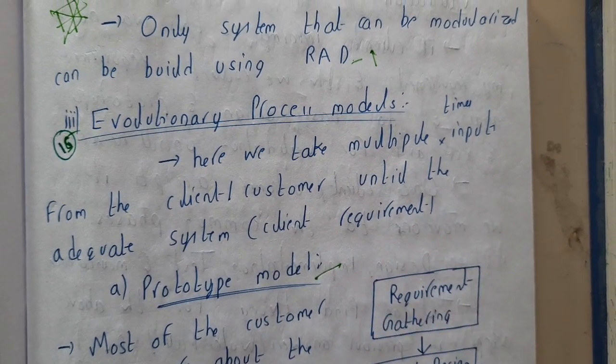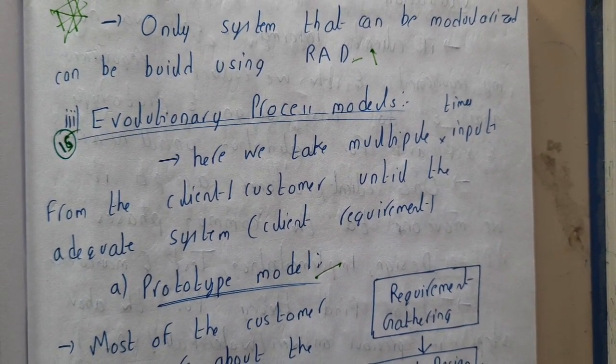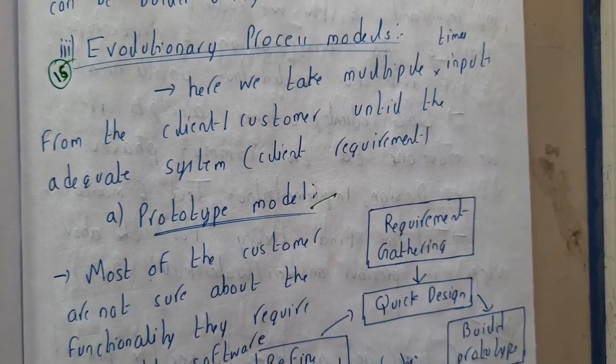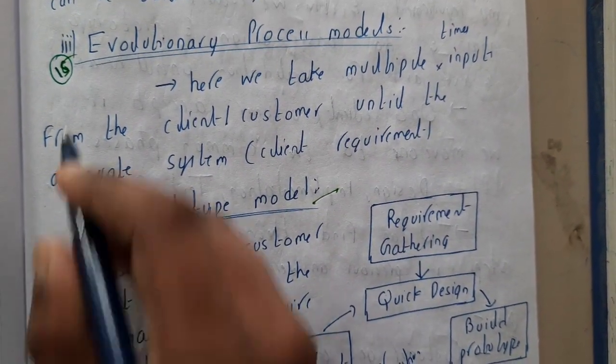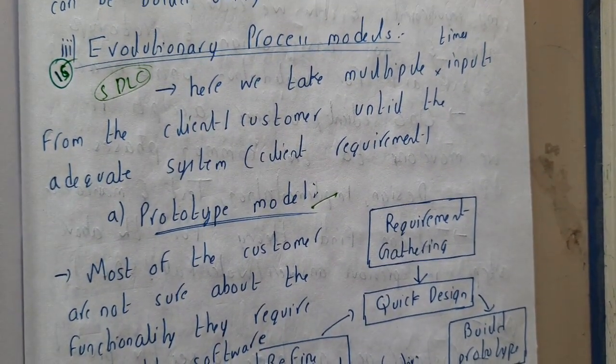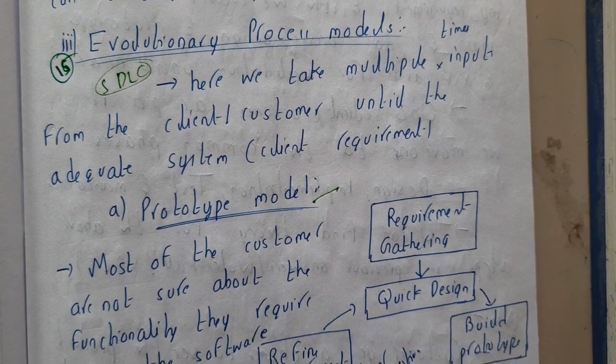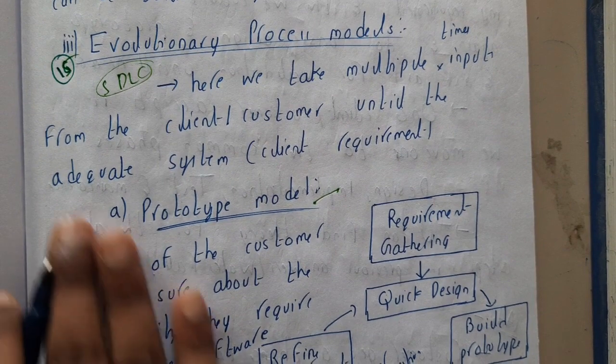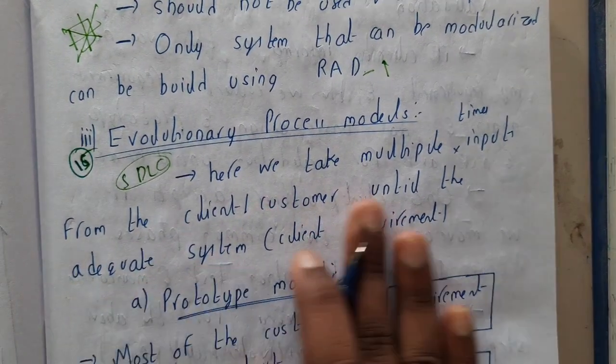I'll be giving you two to three points only for each module. Basically, if you want the notes for each and every module you can refer the previous videos or directly the PDF. You can find the notes from SDLC. You'll be getting a clear idea about each and every component like what is requirement gathering.